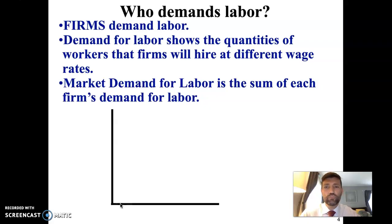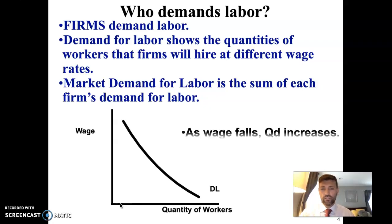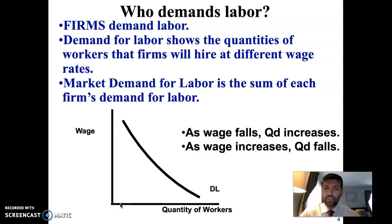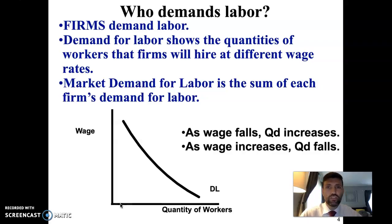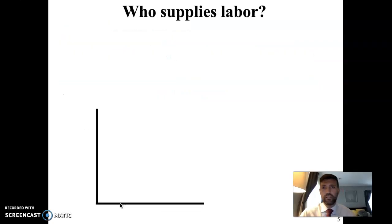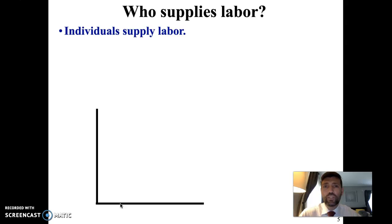The demand for labor shows the quantities of workers that firms will hire at different wage rates, and the demand curve looks just like you might expect. As wage falls, the quantity demanded increases — when firms can pay a lower wage, they'll hire more labor; when they have to pay a higher wage, they'll hire less labor. Individuals, or households, are the entities that supply labor in the market for productive resources.